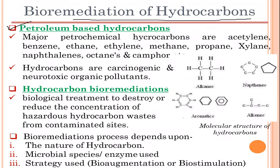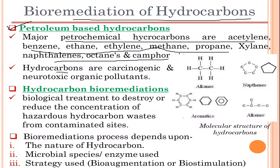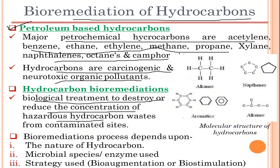The major petrochemical hydrocarbons include acetylene, benzene, ethane, ethylene, methane, propane, xylene, naphthalene, octane, and camphor. Hydrocarbons are carcinogenic and neurotoxic organic pollutants. Hydrocarbon bioremediation is a biological treatment to destroy or reduce the concentration of hazardous hydrocarbon wastes from contaminated sites, and the process depends on the nature of the hydrocarbon, the microbial species or enzymes used, and the strategy used for bioaugmentation or biostimulation.